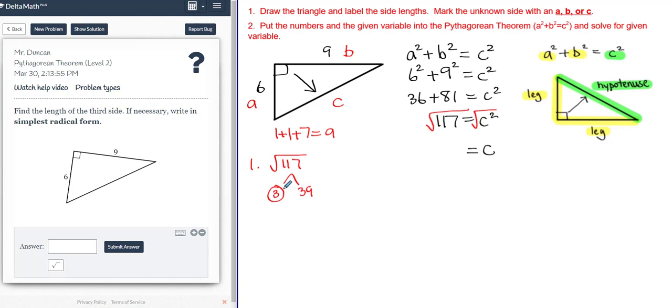Yeah, it's 3 and 39. I mean, if you had to pull out a calculator, that's fine. Obviously, 1 plus 1 plus 7 is 9, 3 goes into 9, 3 also goes into 117, and then just do 117 divide by 3.